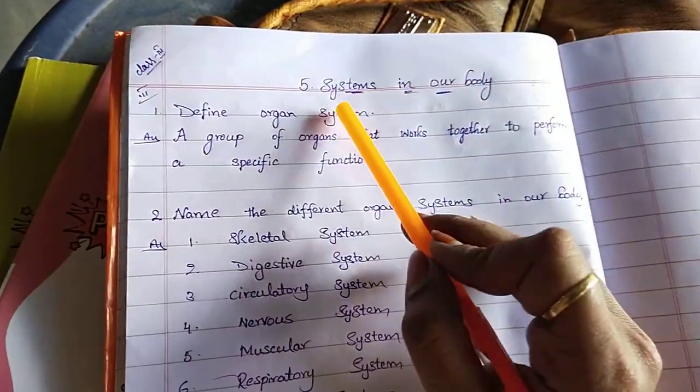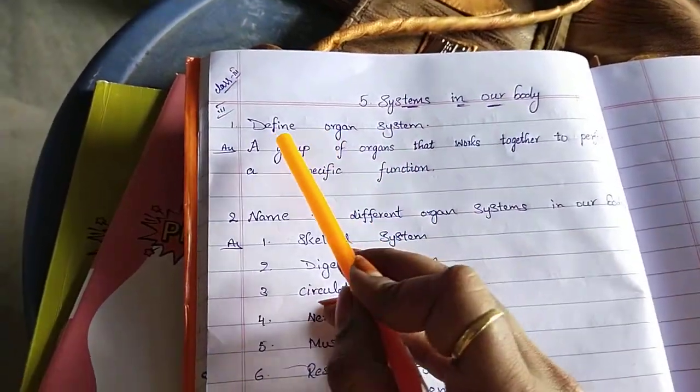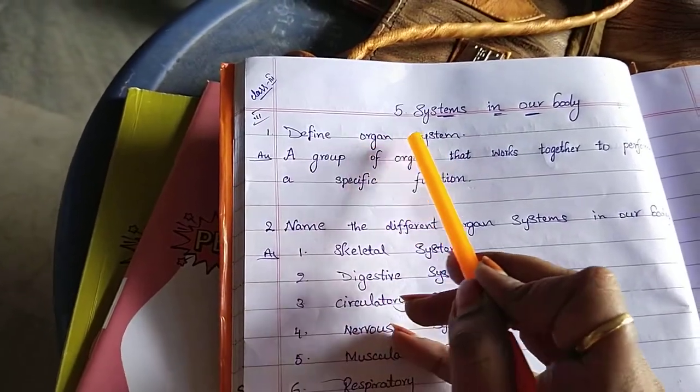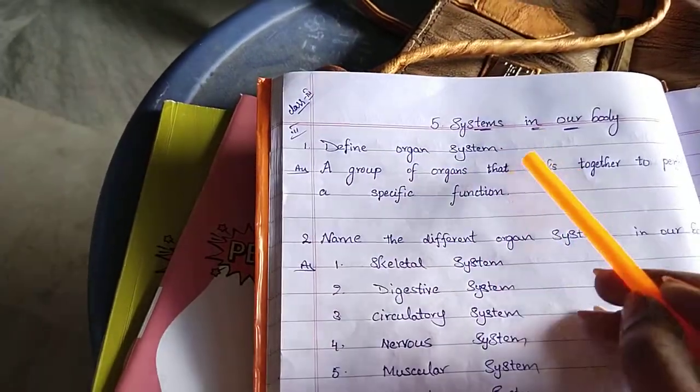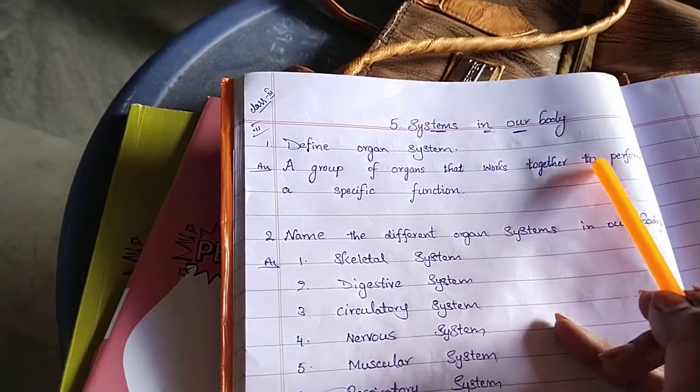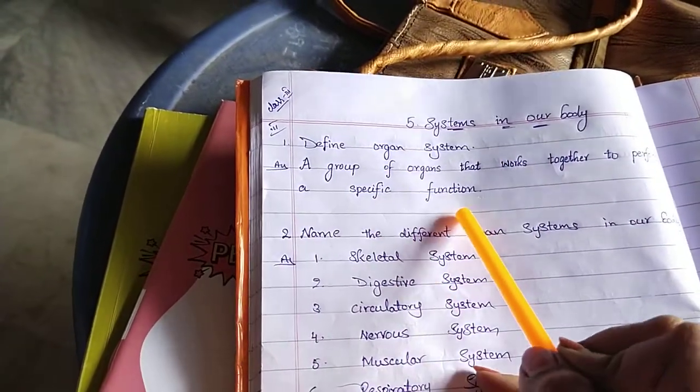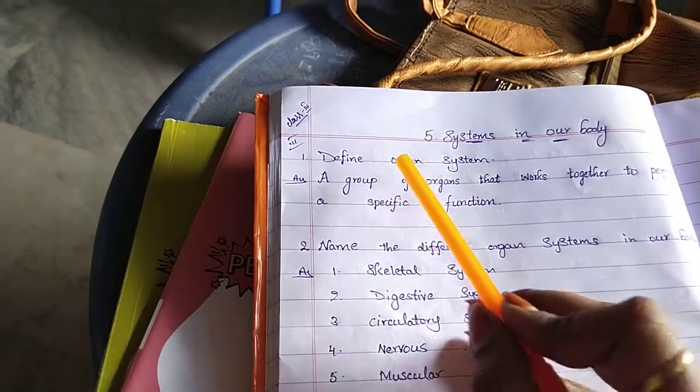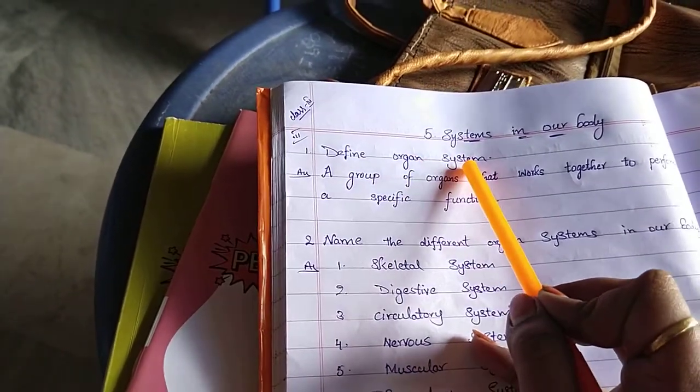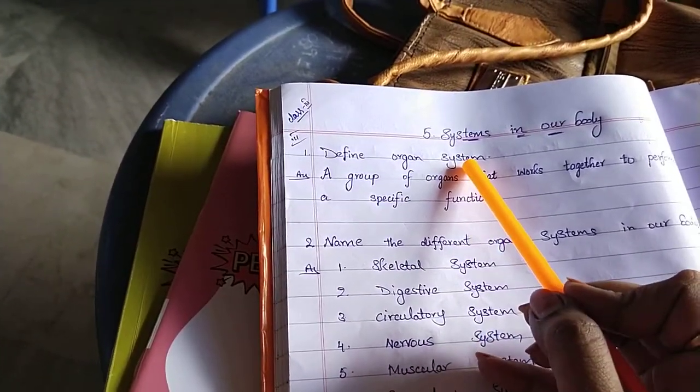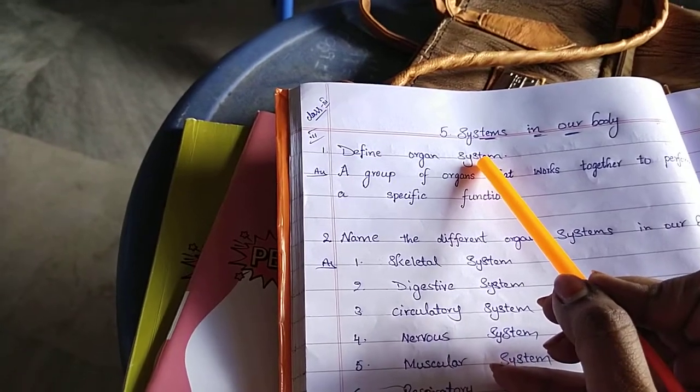Dear children, 5th lesson, systems in our body. First question is, define organ system. A group of organs that works together to perform a specific function. Here they are asking organ system definition, so organ system means a group of organs.